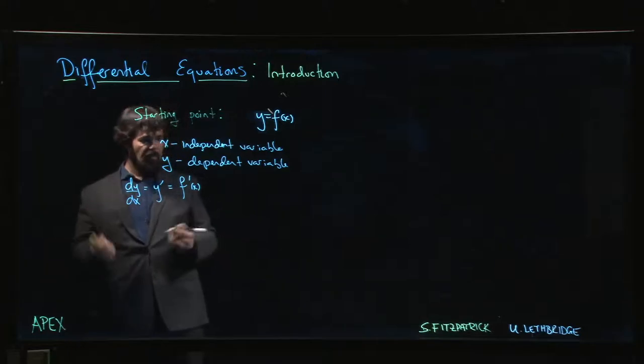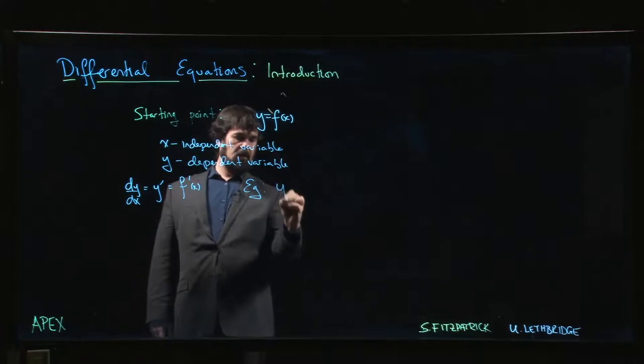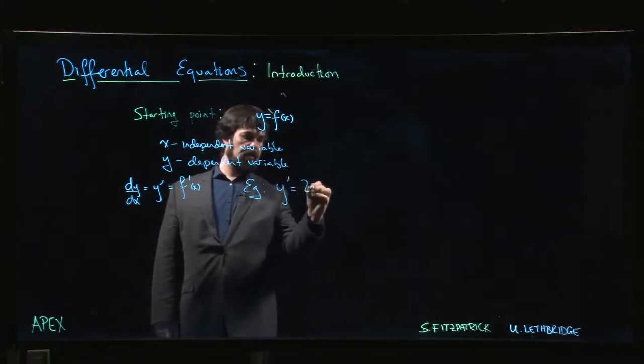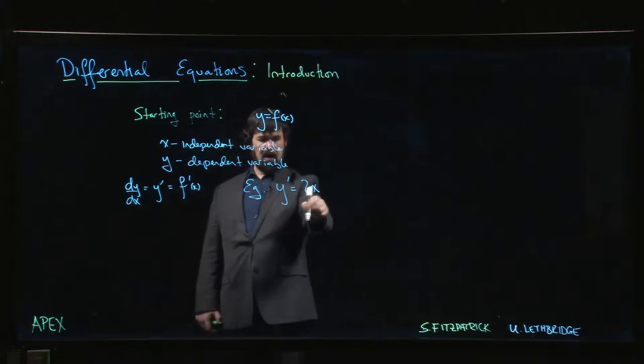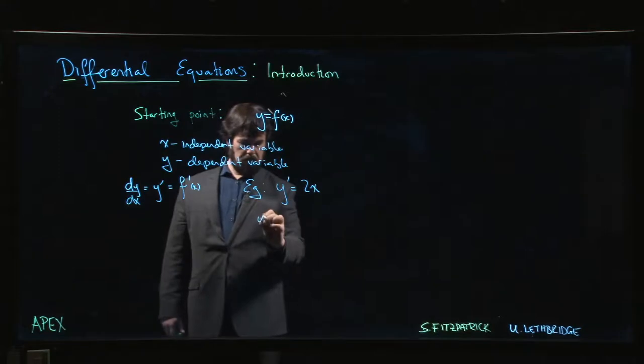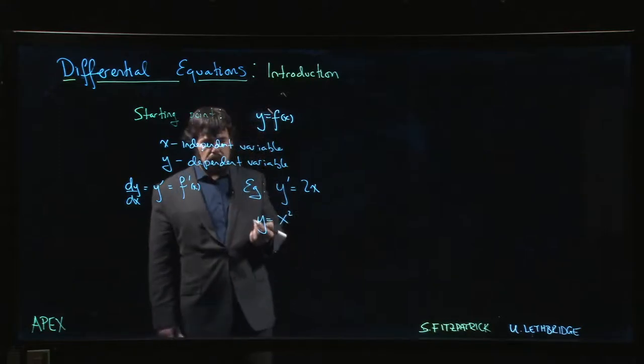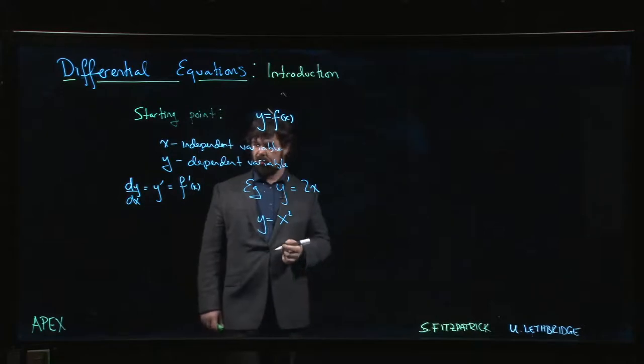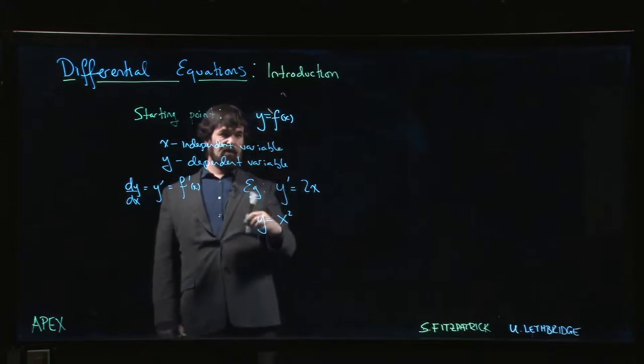Now sometimes this is fairly simple. If I give you something like y prime is equal to 2x, well you'll say hey, hang on, I know a function whose derivative is 2x. Probably I should just say y is equal to x squared. That works. That's a solution. y is equal to x squared, that's f of x, f prime of x gives me 2x.